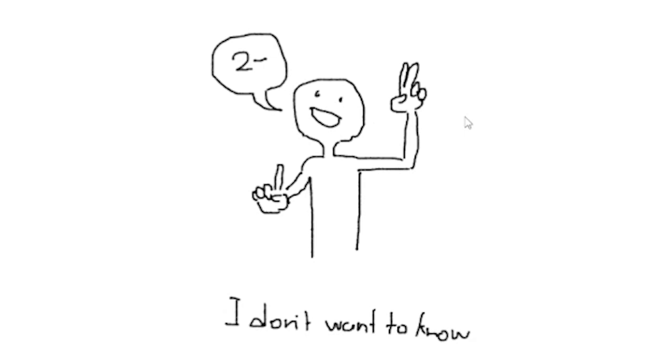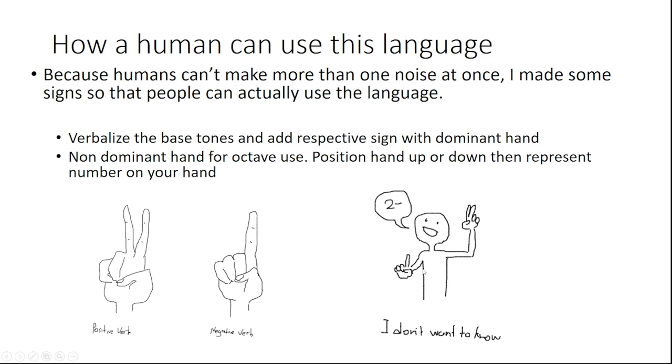Let's look at this guy here. He's saying the second verb extended, which means knowledge. He's holding up a 1 with his dominant hand, so it's a negative verb, and he's holding up 2 with his other hand in the air, so it's the upper octave, and that means with intention. So 'I don't want to know' is what he's saying right there.